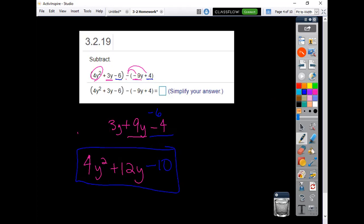So simplified, that's as far as it goes. Y squareds, y's, and numbers, none of those are like terms, so they can't be combined together. So that's all we would have left for our answer on 3.2.19.